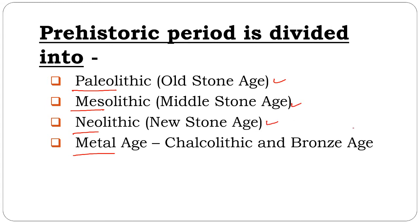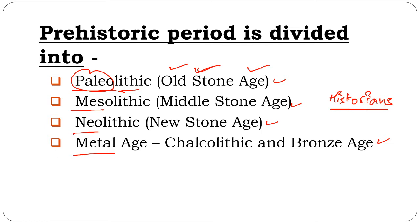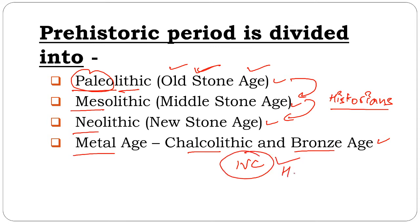These divisions are important: 'Paleo' means old, 'lith' means stone — so old stone age. Understanding the difference between Paleolithic, Mesolithic, Neolithic, and why we have the Chalcolithic and Bronze Ages matters for answering questions correctly. For example, in 2018, UPSC asked about Indus Valley Civilization — specifically whether IVC people knew about horses — this is the type of question we need to address.